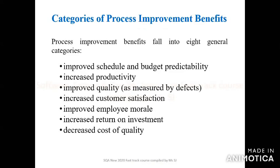The last content of this lecture: categories of process improvement benefits. We have eight general categories which improve and give some benefits to the persons applying different rules of that particular process. Number one, improve schedule and budget predictability. As we already learned in previous lectures, scheduling and budgeting is also an important part of project estimation. Whenever you try to maintain quality in your processes, you should improve the schedule and budgeting predictability.